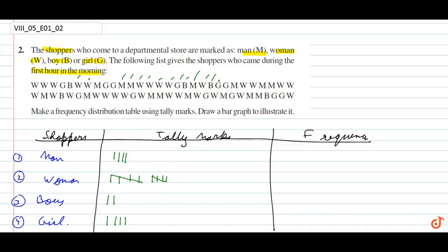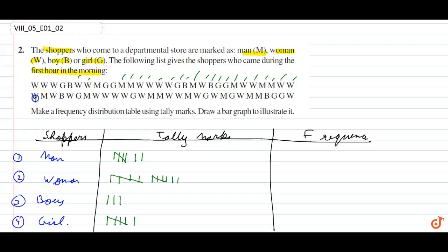Boy, Girl, Girl. Boy, Girl, Girl. Man, Woman, Man. Woman. Man, Woman, Woman, Woman. Man, Woman, Man, Woman.